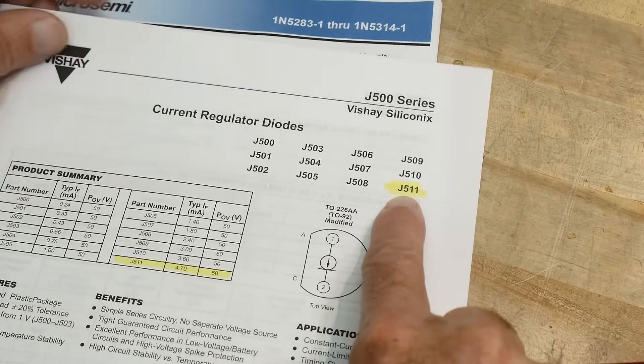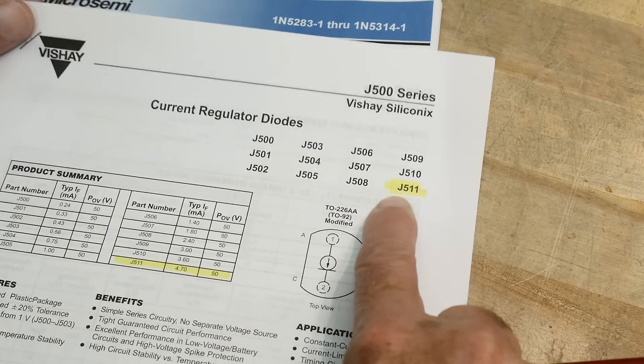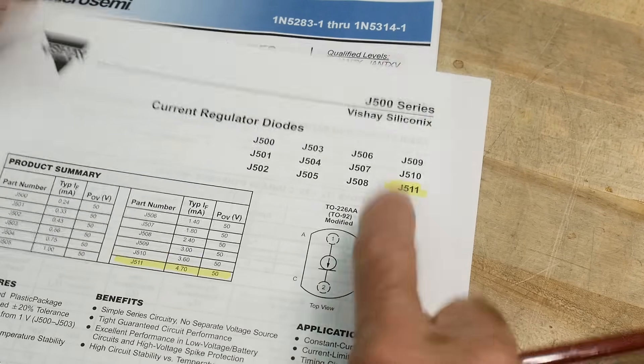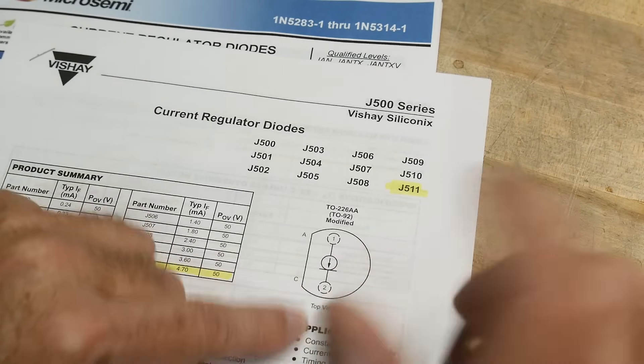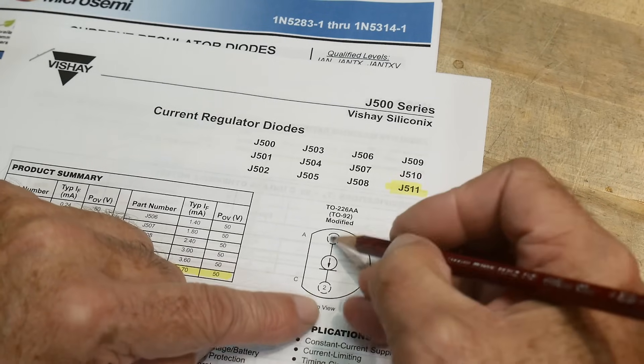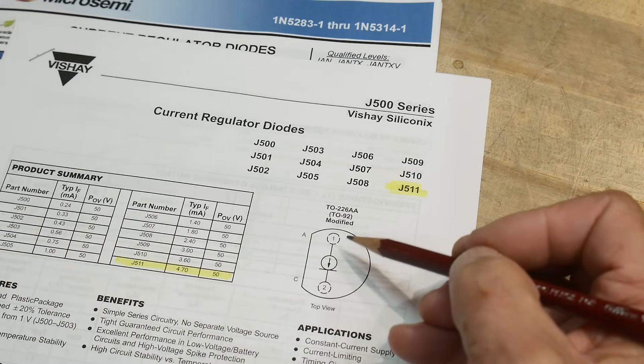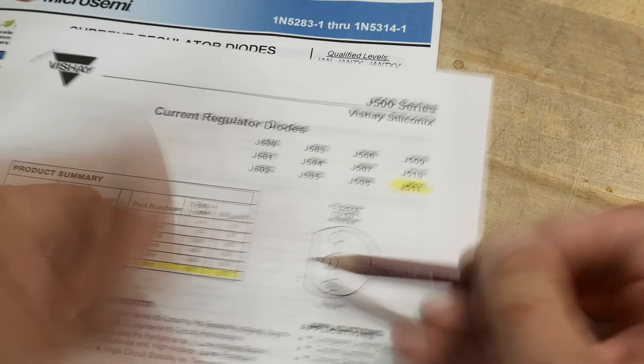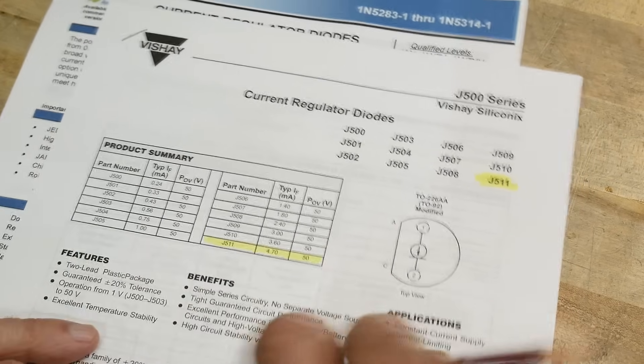There are other current regulator diodes though, so the chip of the day is going to be a J511 made by Vishay. It is a diode - you can see here it's in a TO-92 can, but it's just two pins. You have anode, cathode, and you're done. The 511 is 4.7 milliamps.